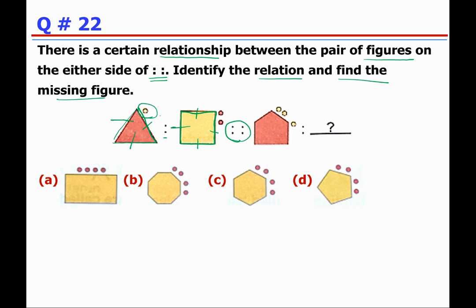The circle also increases by one in number — from one circle to two circles. So the pattern is: the figure's sides increase by one, and the number of circles increases by one. Now applying this: the given figure has five sides, so the answer figure should have six sides. The circle count here is three, so it should become four circles.